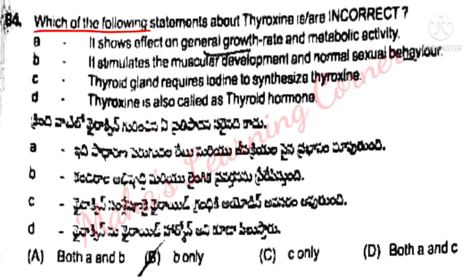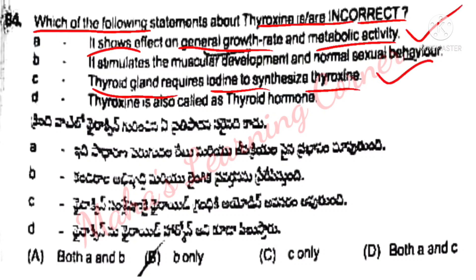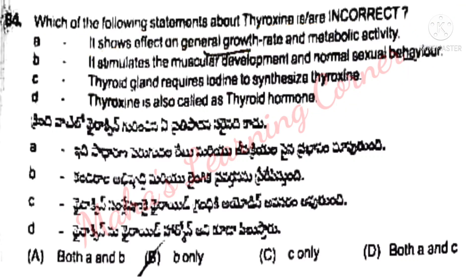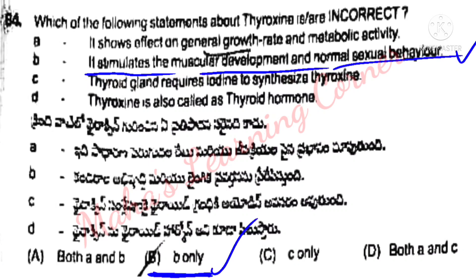Which of the following statements about thyroxine is incorrect? Statement 1: It shows effect on general growth rate and metabolic activity — this is correct. Statement 2: Thyroid gland requires iodine to synthesize thyroxine — correct. Statement 3: Thyroxine is also called thyroid hormone — correct. Statement 4: It stimulates muscular development and normal sexual behavior — this is incorrect. Option B is the correct answer.